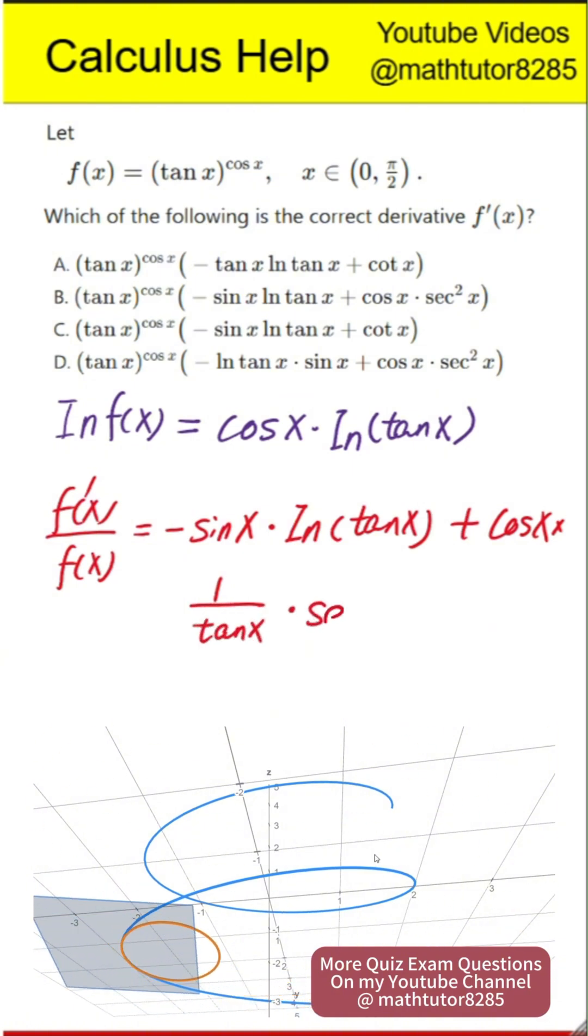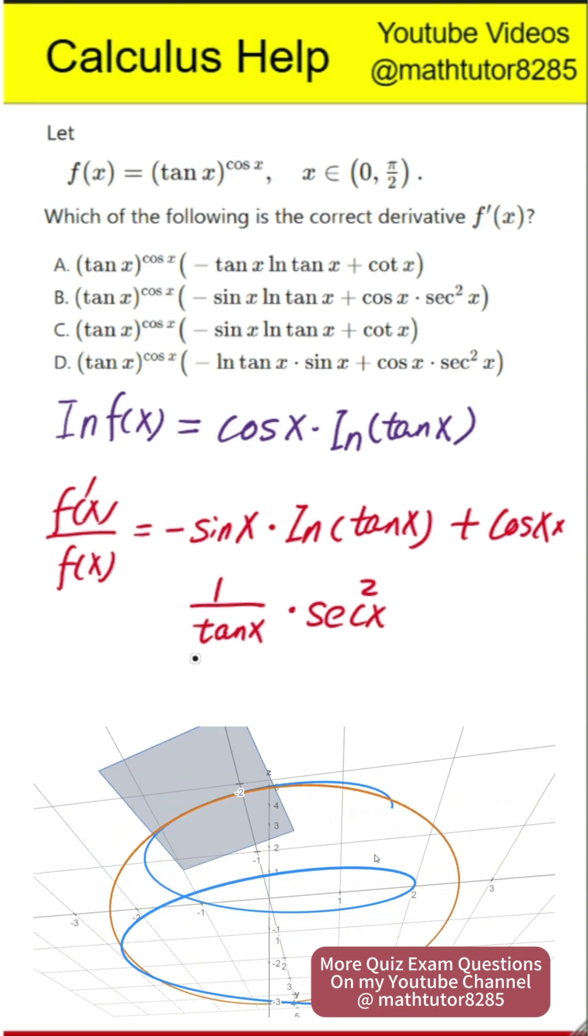The derivative of natural log of tangent x is secant squared x divided by tangent x. So the entire derivative becomes f prime of x over f of x equals negative sine x times natural log of tangent x plus cosine x times secant squared x over tangent x.